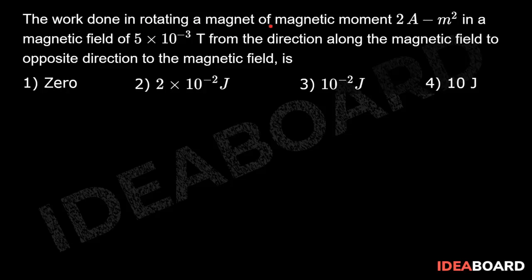The work done in rotating a magnet of magnetic moment 2 ampere meter square in a magnetic field of 5 into 10 power minus 3 tesla from the direction along the magnetic field to opposite direction to the magnetic field is: